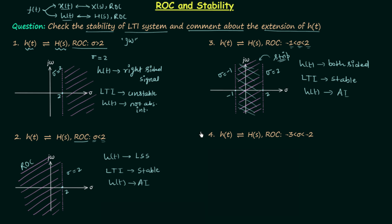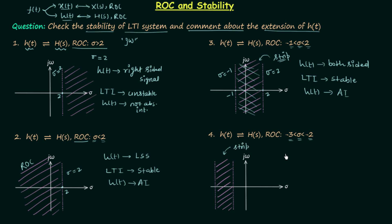Let's move to the fourth part. Here σ is greater than minus 3 but less than minus 2. Following the same process, the ROC is again a strip, so h(t) is both-sided. However, the LTI system is unstable because the imaginary axis is not included in the ROC, and therefore h(t) is not absolutely integrable.